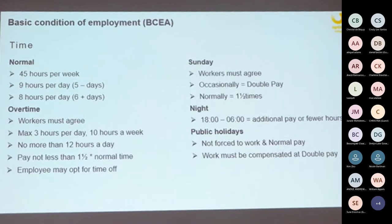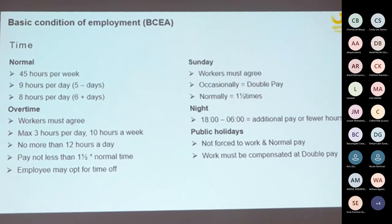An employer cannot pay you less than one and a half times your normal hourly wage for overtime. That means if you get a normal hourly wage of R100, you need to get R100 times 1.5 per overtime hour — which is R150 per overtime hour.